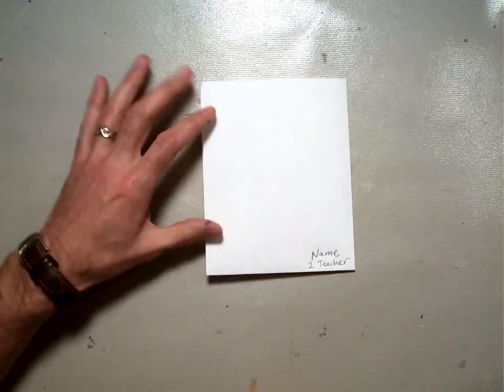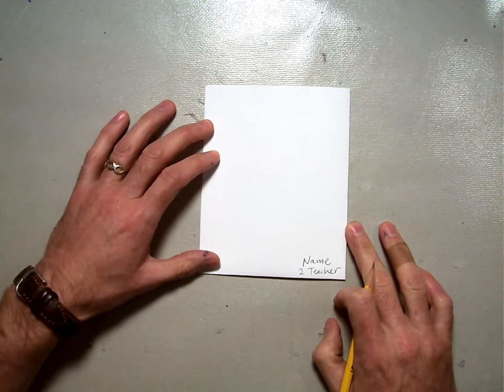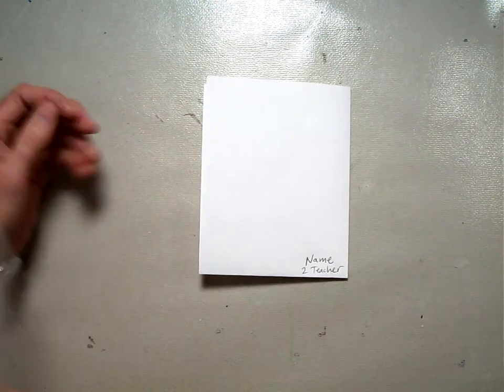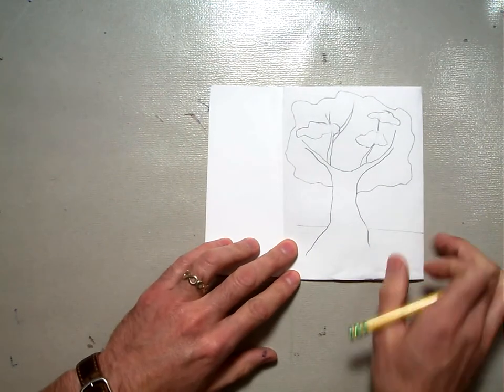Then we're going to start drawing together. Our first drawing is going to be a drawing that looks like this one. I call it a Y tree. It's kind of my tropical Y tree.